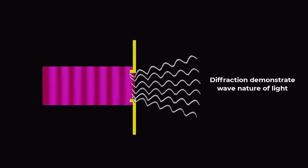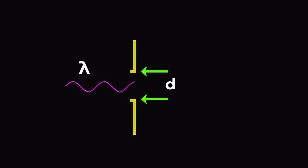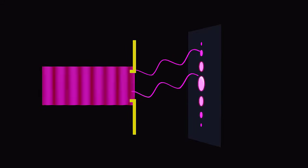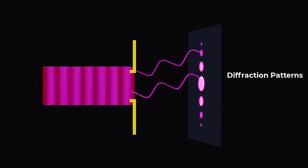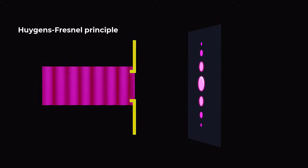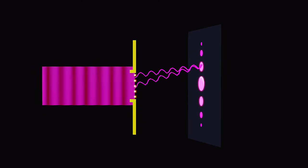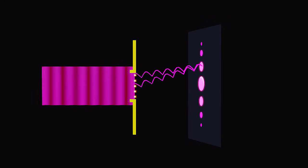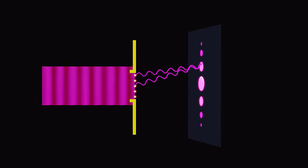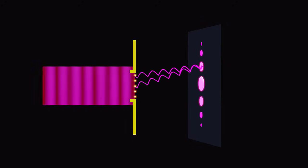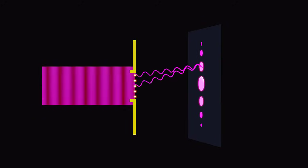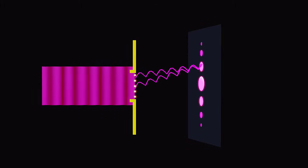Diffraction of light demonstrates the wave-like properties of light. When light waves encounter an obstacle or slit comparable in size to the wavelength of the light, the light waves bend around the edges of the obstacle, creating a pattern of alternating dark and bright regions known as diffraction patterns. According to the Huygens-Fresnel principle, every point on a wave front acts as a secondary source of waves. These waves from different parts of the opening interfere and produce the diffraction pattern on the screen, indicating that light is behaving as a wave, interfering constructively at some points and destructively at others.